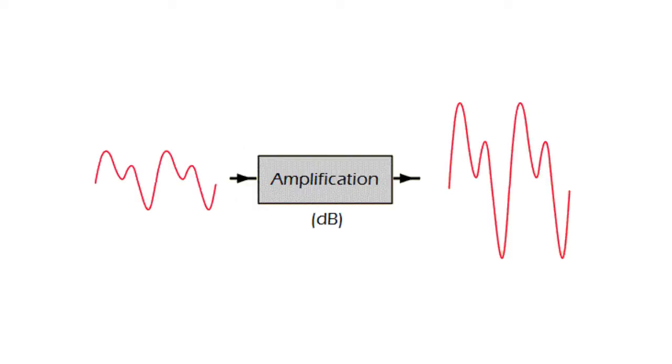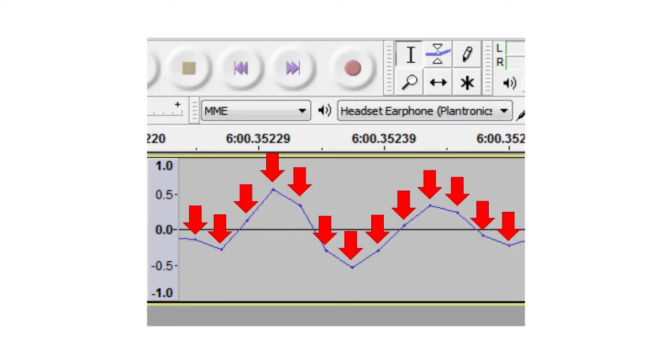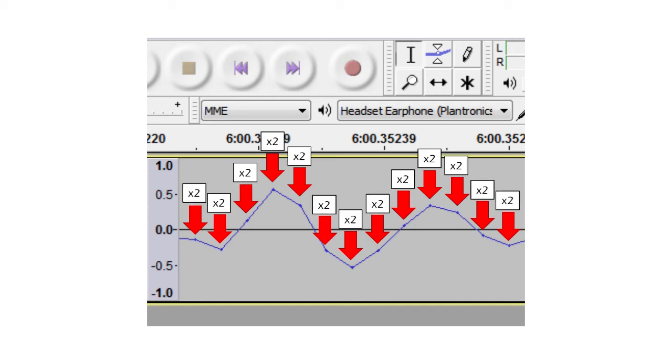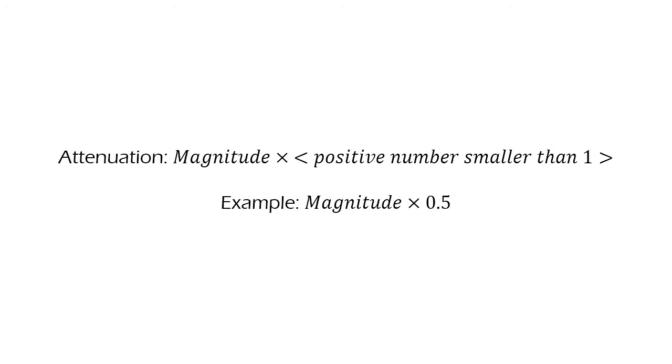Finally, decibels are also useful in amplification. Amplifying a wave means multiplying the value of all of its individual points by a number. For example, to amplify a wave to double the amplitude, we multiply all of its points by 2. An attenuation is simply amplifying, or multiplying, by a positive number smaller than 1, for example, 0.5.